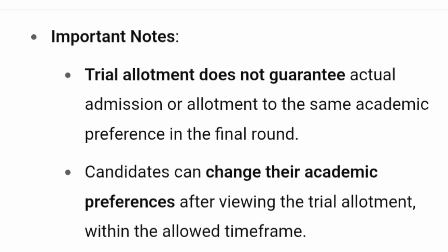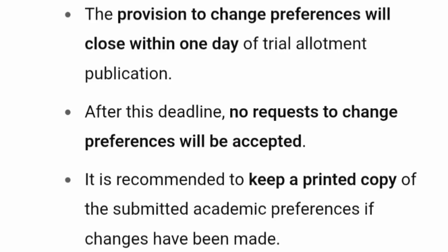You can edit your academic preferences after the result of trial allotment, but the deadline is up to the 3rd of June. The provision to change will be closed within one day of trial allotment — the 2nd is the trial allotment and up to the 3rd you can make changes. After this deadline no request to change preference will be accepted. It is recommended to keep a printed copy of whatever academic preferences you have submitted. In total, up to 51 academic preferences can be made, as explained in the previous video.